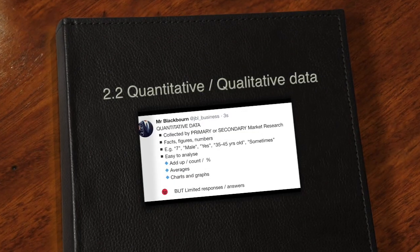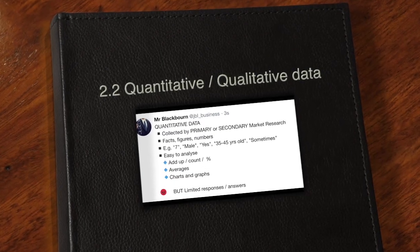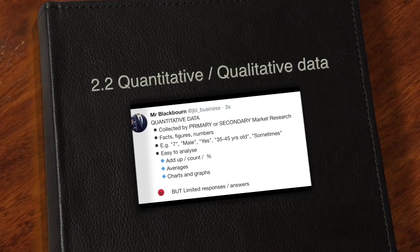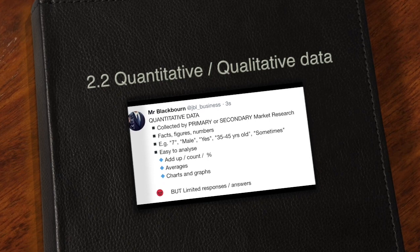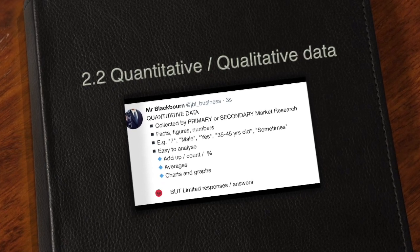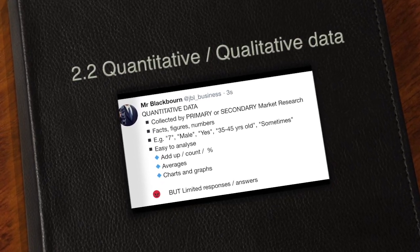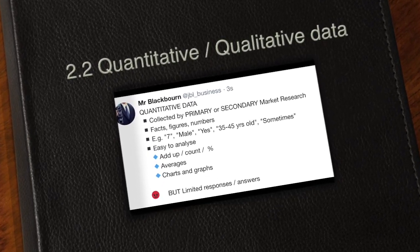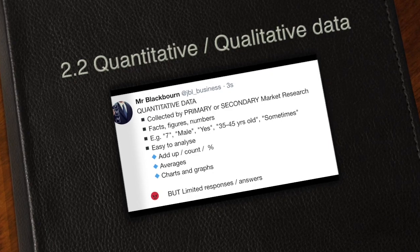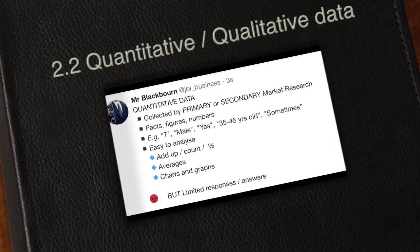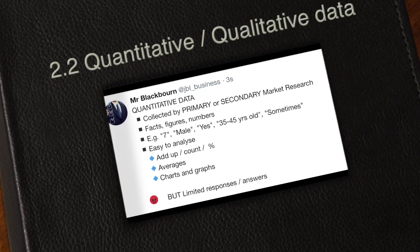When conducting market research, the type of research — primary or secondary — can give us quantitative or qualitative data. This video is about the difference between the two.